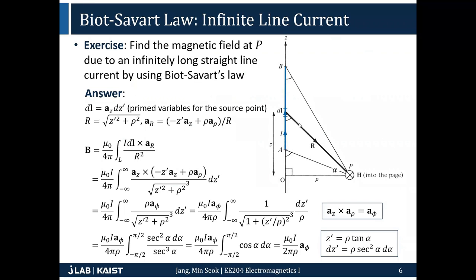The key thing to keep in mind is that you must differentiate between the source position and the position of interest. My convention is putting a prime for the source position and unprime for the position of interest. Once you successfully translate DL, R, and AR as functions of coordinate variables, everything left is just simple integration. We practiced this many times in the last lecture, so I don't need to repeat it. Let me know if you have any questions about applying Biot-Savart law.